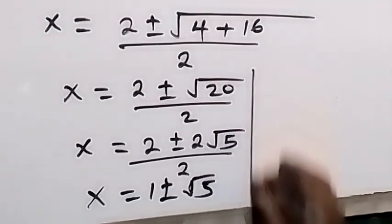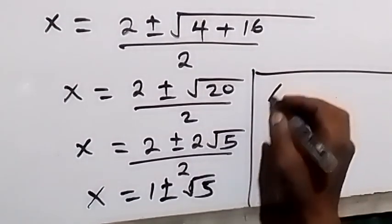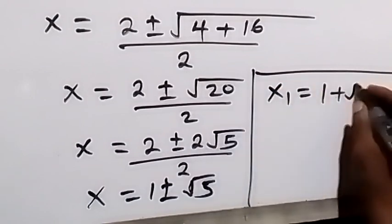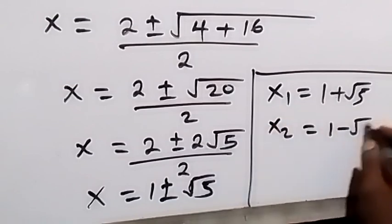It implies that we have 2 values of x here. We have the first value of x to be x1 equals to 1 plus root 5, and x2 equals to 1 minus root 5.